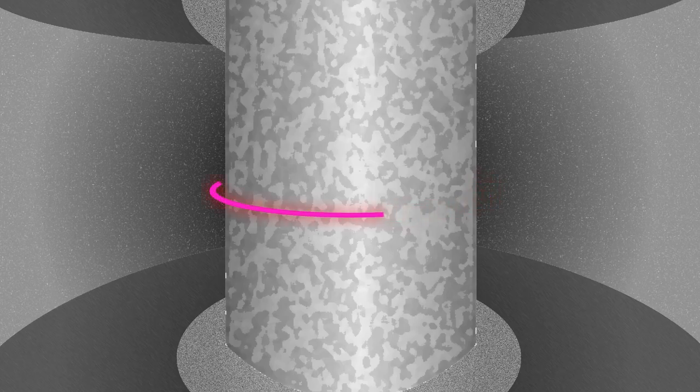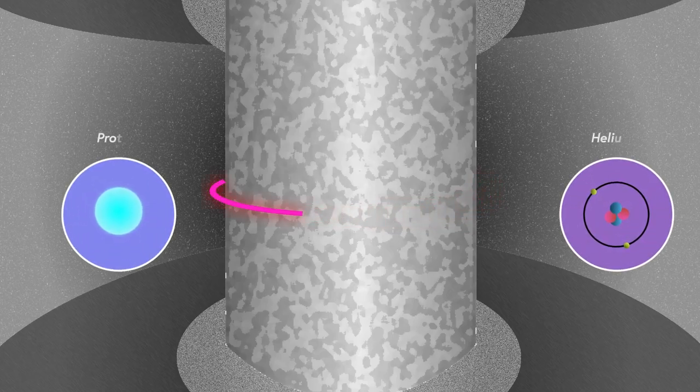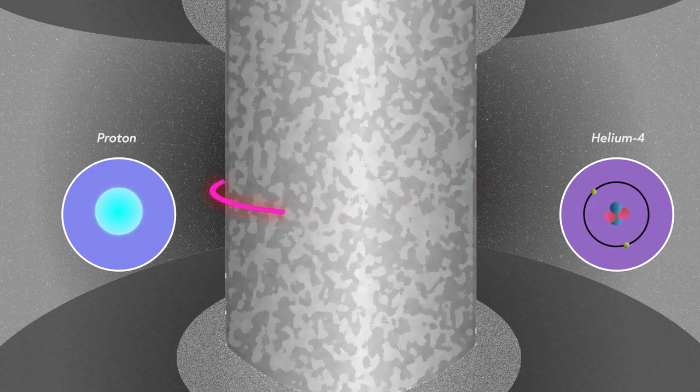In order to contain such a reaction, it's likely a tokamak would have to be constructed. Tokamaks are torus-shaped machines which use powerful magnetic fields that can contain thermonuclear fusion reactions. The magnetic field will prevent the high-energy byproducts of the fusion from damaging and melting the surrounding ship components.